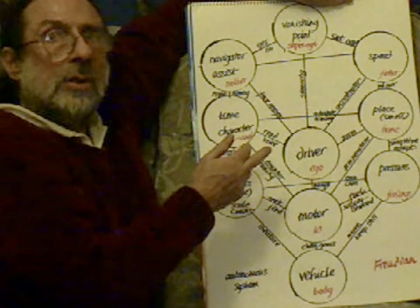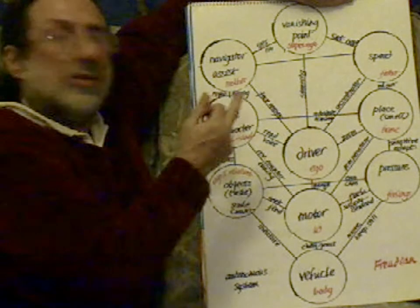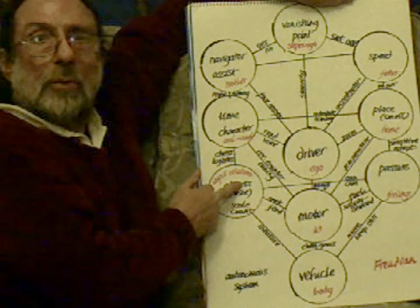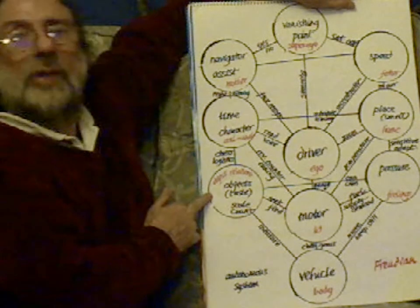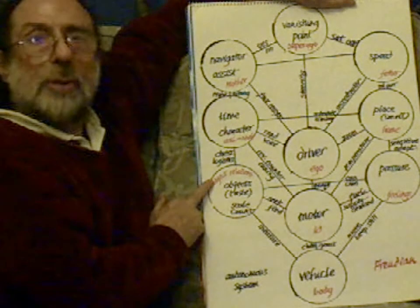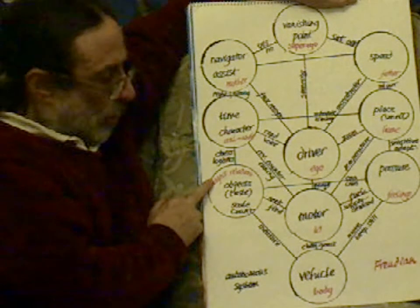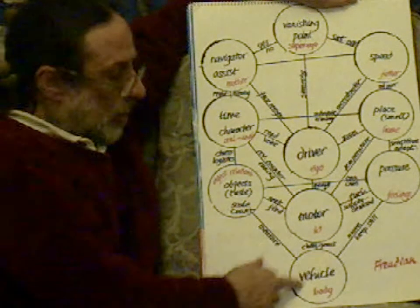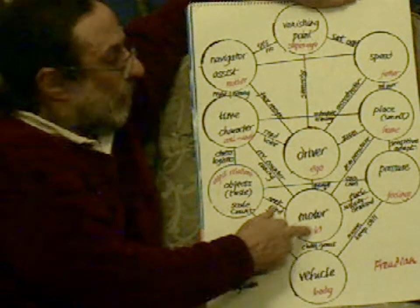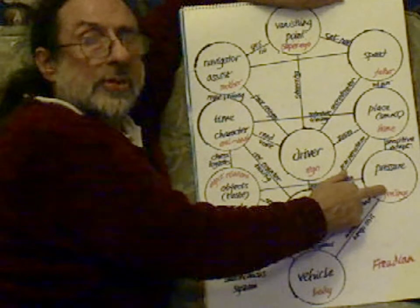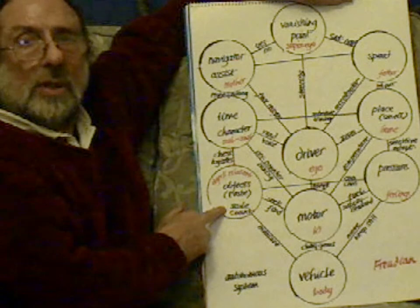At a later stage, we can see a two-dimensional surface and recognise there's a three-dimensional object there — from a corner of an object, we recognise the whole object. So we have an inventory of objects, which in Freudian terms is the object relations — the relationship with objects that were around when we were born. In Freudian terms, the vehicle is our body, the motor is the id, our libido. Then we have the pressure that we're under, which gives us feelings. The object relations give us all sorts of envy and things.